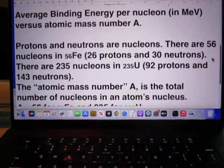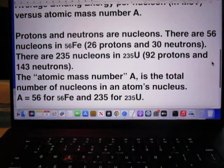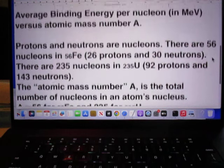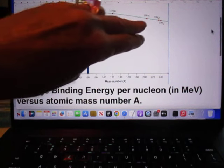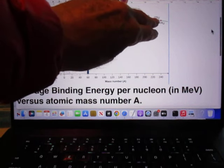There are 235 nucleons in uranium-235, 92 protons, that's why it is uranium, and 143 neutrons. And here you see uranium-235.